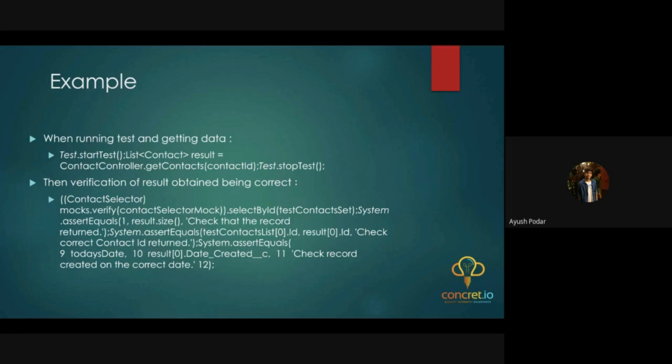When you run the test, it runs between start test and stop test. You obtain the list of contacts and then verify using contact selector mocks dot verify. The verify and assert methods allow you to get values and confirm that the data you mocked is being returned correctly.